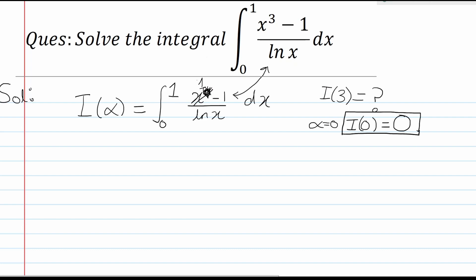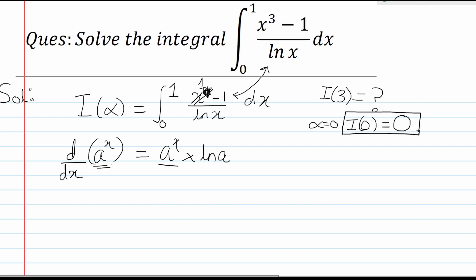The next step in this approach is to differentiate once. Before I proceed, I want to explain two concepts quickly. First, I want to remind you of a basic formula: the differentiation of a to the power x with respect to x is a to the power x multiplied by ln of a. That is, we take the ln of the base. This is something you need to keep in mind for the solution.